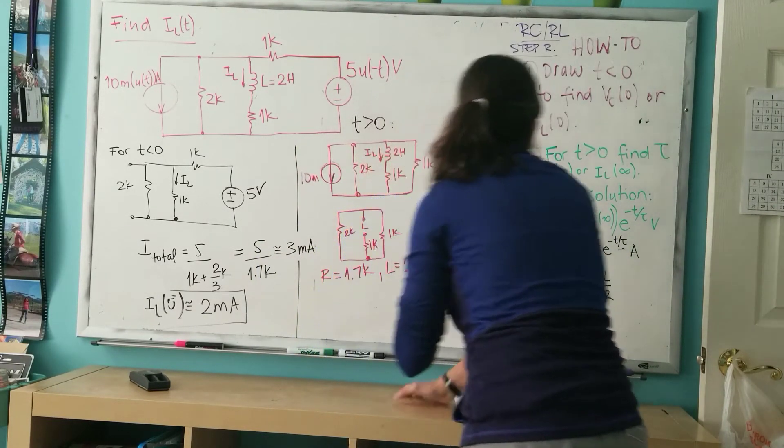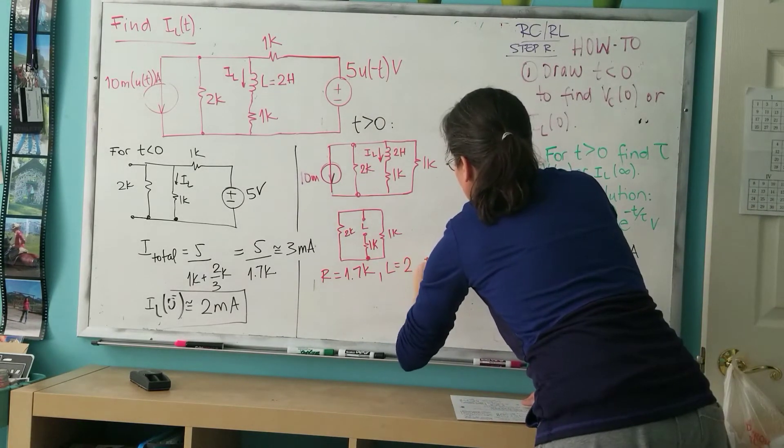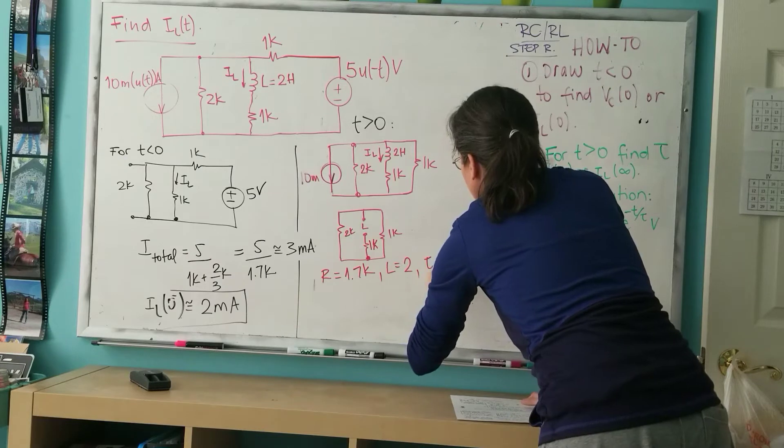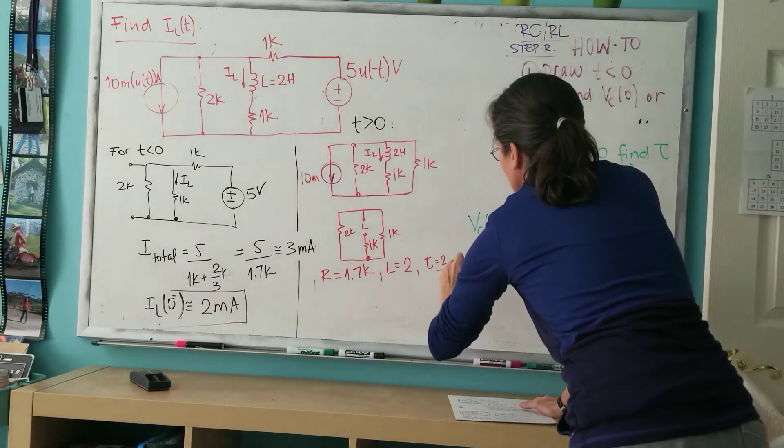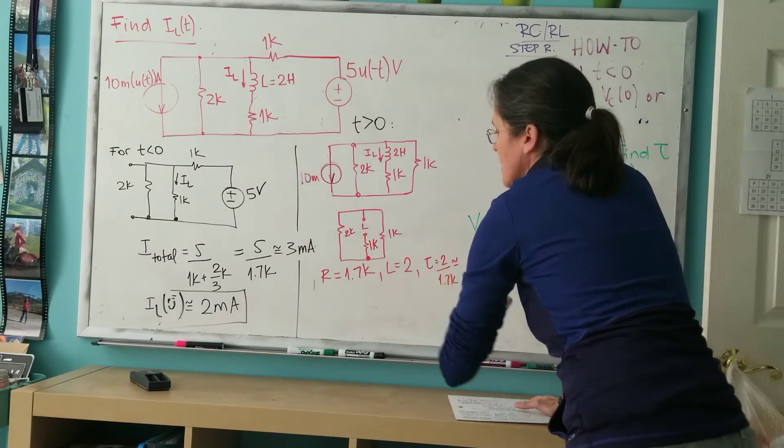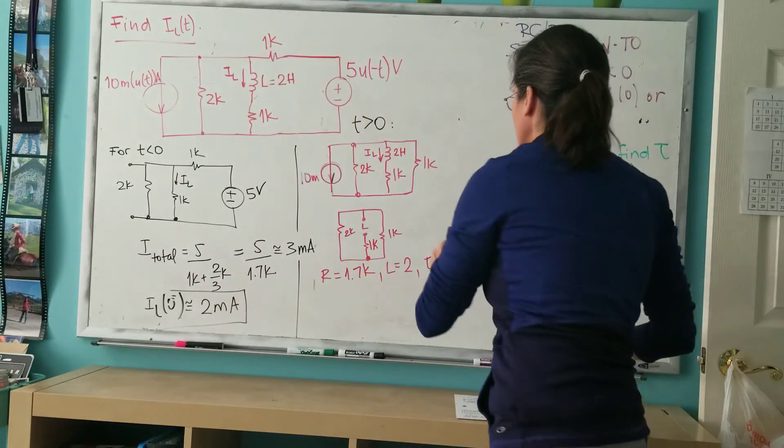And L is 2, so tau will be 2 divided by 1.7k, which is a little bit larger than 1, well, almost 1 actually. So I'm going to leave it like this and put this in the exponent.